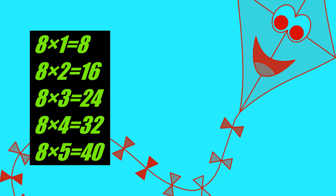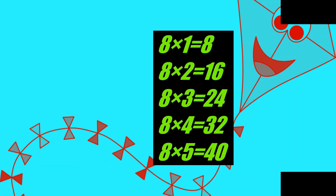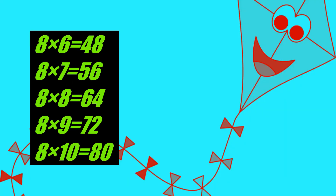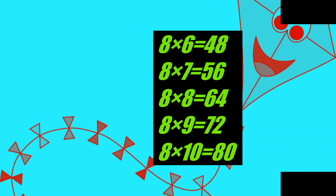Eight one's a eight, eight two's a sixteen, eight three's a twenty-four, eight four's a thirty-two, eight five's a forty, eight six's a forty-eight, eight seven's a fifty-six, eight eight's a sixty-four, eight nine's a seventy-two, eight ten's a eighty.